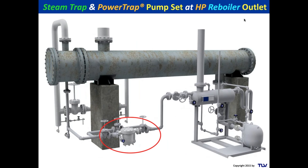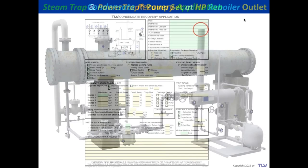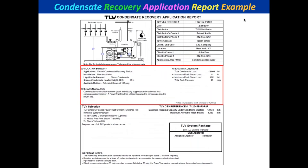A simple solution might be to put a trap into a pump set. You'll need to deal with the vent, but it gets condensate out without discharging to grade and allows recovery. For a trap going into a pump set, we use a Condensate Recovery Application — CRA. Like all our forms, CRAs are checked by four people. The data section gives you the load, the flash load, and the required flash piping size.